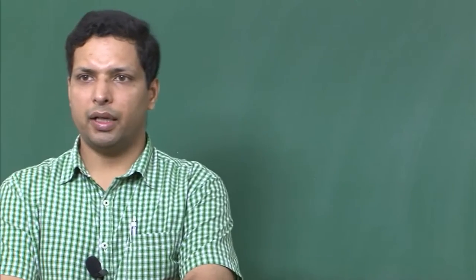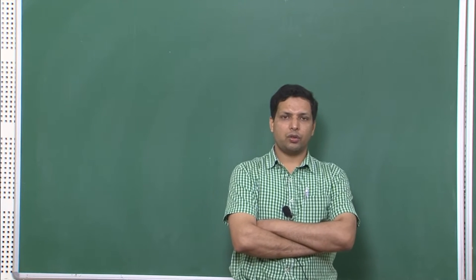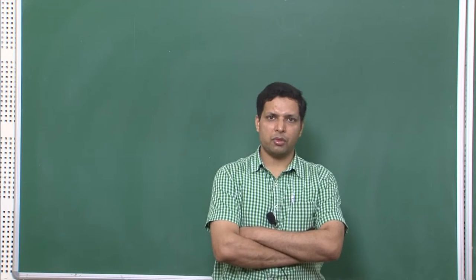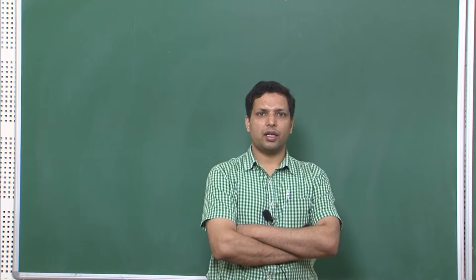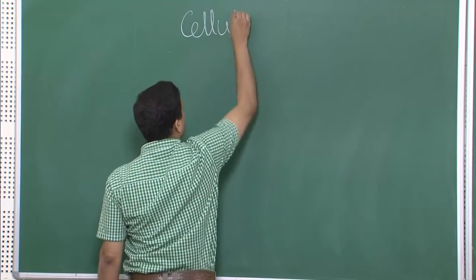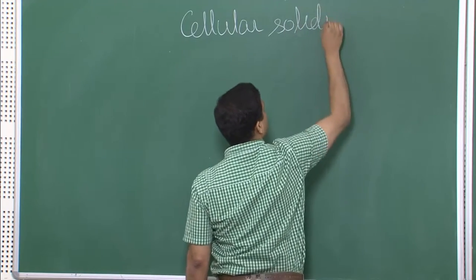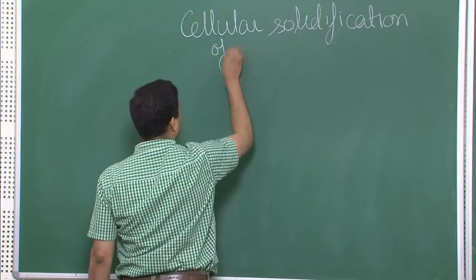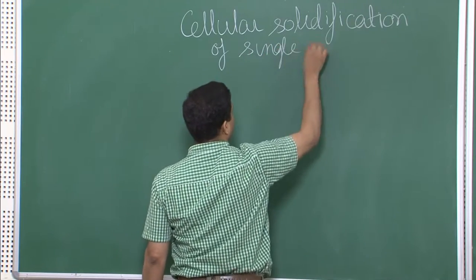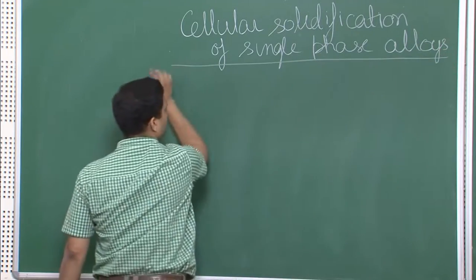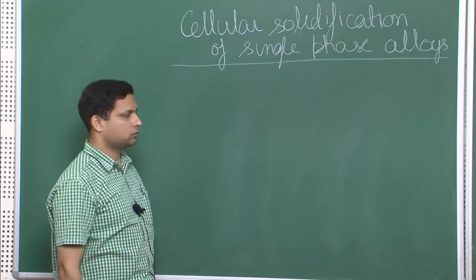Until last lecture we completed the planar solidification of single phase alloys. Single phase alloys when you are trying to get planar solidification that is mainly for single crystal growth, but that need not always be the case. Planar solidification may also not always occur — you may get non-planar or what is called cellular solidification. Today we will look at cellular solidification of single phase alloys, which is our topic for this and probably the next lecture.